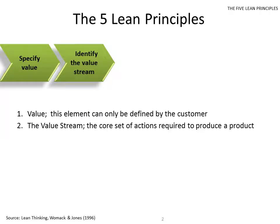After you understand what customers value, the second lean principle is identify the value stream. This is the core set of actions required to produce a product or service, step by step by step.